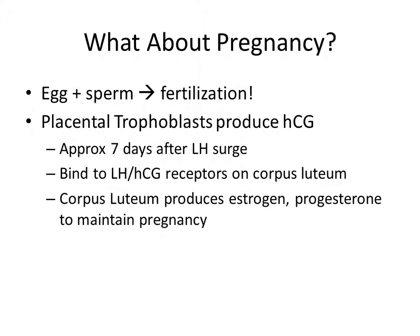If pregnancy occurs, placental trophoblasts start producing HCG approximately one week after the LH surge — one week after ovulation. HCG doubles every two days and binds to LH receptors on the corpus luteum, as well as HCG receptors. This causes the corpus luteum to continue producing estrogen and progesterone, maintaining the pregnancy. If the corpus luteum were removed after fertilization, estrogen and progesterone production would stop and pregnancy would fail. If fertilization does not occur, the corpus luteum cannot maintain estrogen and progesterone, leading to endometrial sloughing and menses.